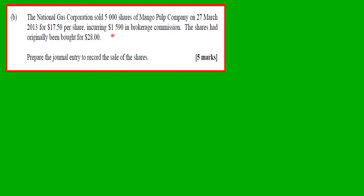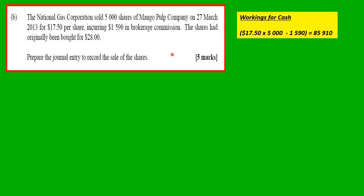The shares are being sold at a loss, and there is a brokerage fee of $1,590 which will increase the loss. For the workings: the cash received should be $17.50 multiplied by 5,000 shares, then subtract $1,590 brokerage, so the cash received on the transaction should be $85,910.